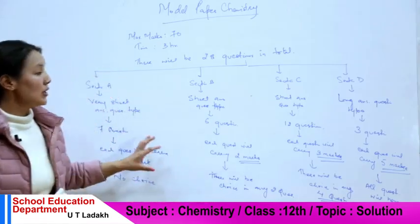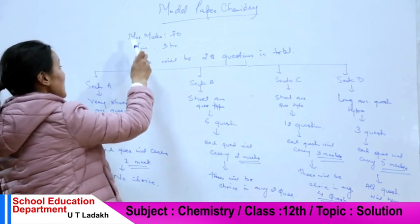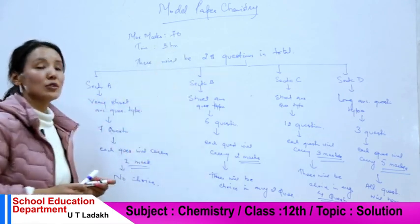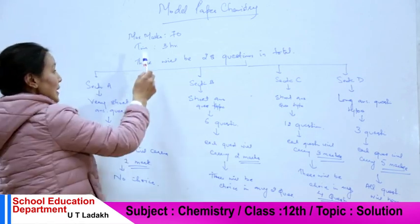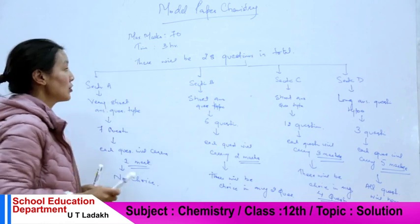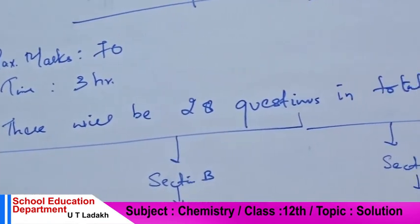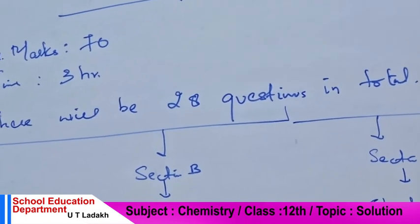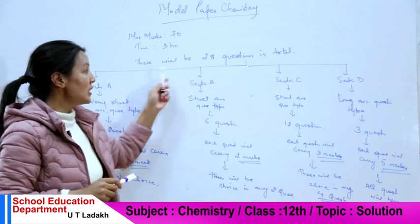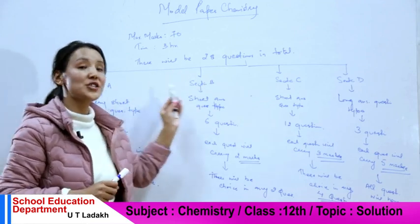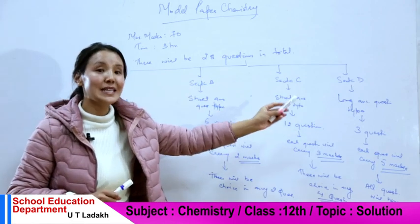We have a lot of chemistry, marks — maximum marks — and we have a lot of theory. In this week, there will be 28 questions. We have questions on the overall paper; we have some questions about section G and section A, B, C, and D.